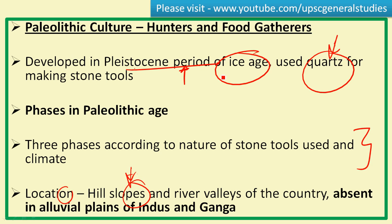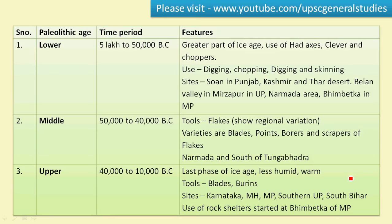The Paleolithic cultures thrived on hill slopes and in river valleys of the country. Importantly, the Paleolithic culture is absent in the alluvial plains of the Indus and Ganga. This is an important point that may come in the prelims examination — the absence of early Paleolithic culture in the plains of Indus and Ganga.